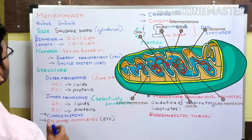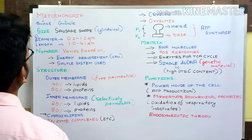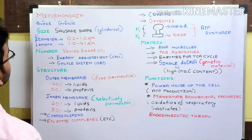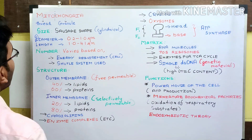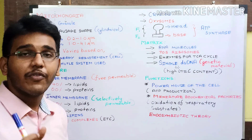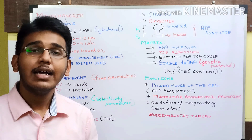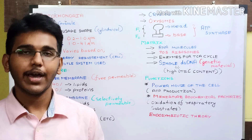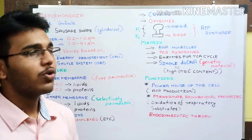Let us begin with the word mitochondria and its origin. Dividing the word into two parts: the prefix 'mito' means thread in Greek, and the suffix 'chondria' is derived from the Greek word 'chondros' which means granule. So mitochondria is nothing but a thread-like granule suspended in the cytoplasm of a eukaryotic cell. This is the basic definition of mitochondria.